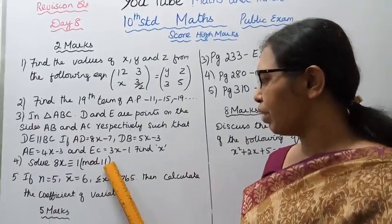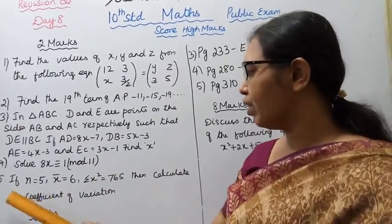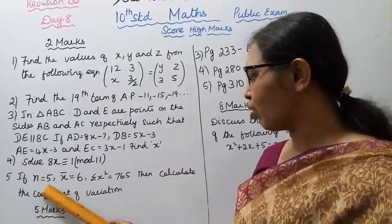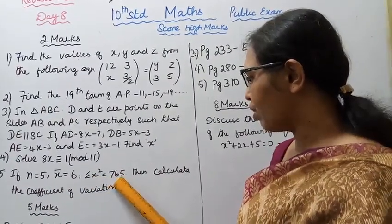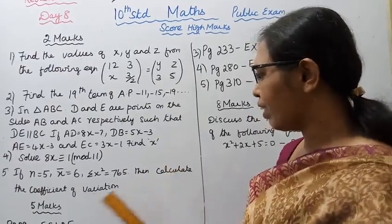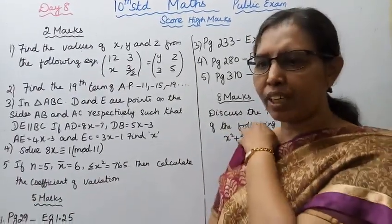Fifth, if n = 5, x̄ = 6, Σx² = 765, then calculate the coefficient of variation. Coefficient of variation formula is σ/x̄ × 100.